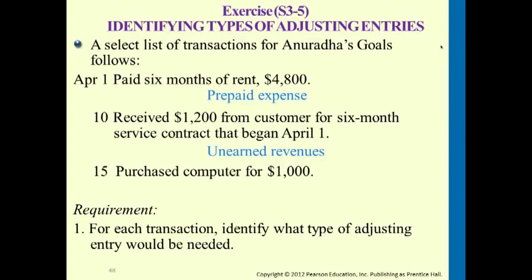April 15th, the company purchased a computer for $1,000. A computer is a long-term asset, so later on we will need to represent the part of the value that has been reduced as we use it. This falls under the depreciation category. These blue lines represent the adjustments that need to be made because of these journal entries that happened before.